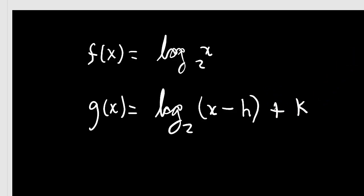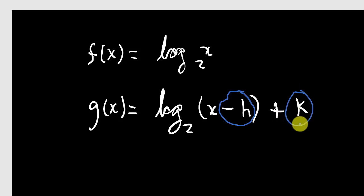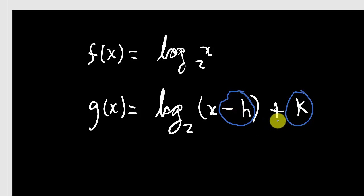This number h inside is going to move the graph left and right, and the number k out here will move the graph up and down. If it's x plus some number, it'll shift the graph to the left. If it's x minus some number, it'll shift it to the right. And if we have plus k it shifts up; minus k shifts it down.